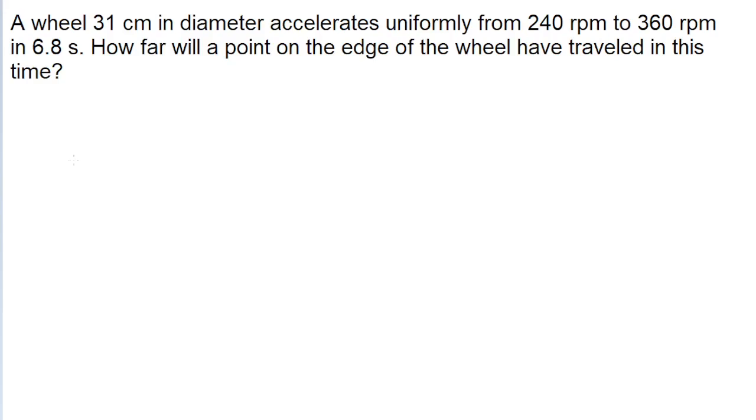To find out how far a point on this wheel will travel, the first thing we want to do is figure out what angle it moves through. So because we have uniform angular acceleration and we're given the initial and final angular speeds, let's first put them together, take an average, and find the average angular speed.